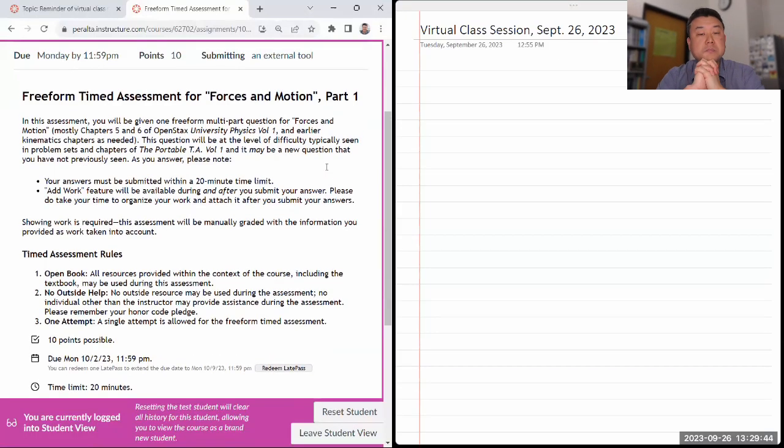The way parts one and two are broken down is part one usually involves a single body, so you don't have to worry so much about interaction between two objects. Part two, you will usually have to worry about interaction between two or more objects. In both parts, you might see some parts that require use of kinematics formulas, or you might not. It kind of depends on the question. I'm going to start with part one because it tends to be a little simpler.